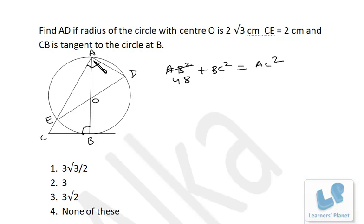The next relation: BC is tangent and CA is secant. You can recall the tangent-secant theorem, that is BC² = CE × CA. CE is actually 2, so BC² is 2AC.